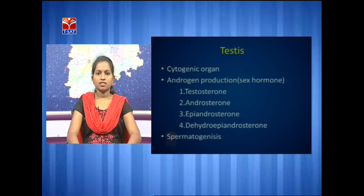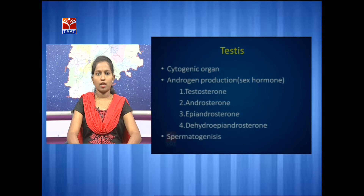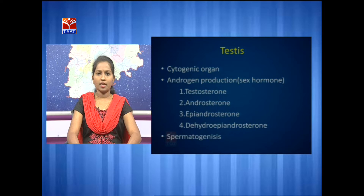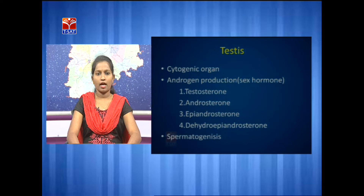The testis is a cytogenic organ helpful in the production of steroid hormones called androgens. These androgens include testosterone, androsterone, epiandrosterone, and dehydroepiandrosterone. The testis is also helpful in the production of sperms through the process of spermatogenesis. The hormones secreted by the testis are helpful in the development of male genital organs and show secondary sexual characters in males, like muzzle development and development of beard and mustache.